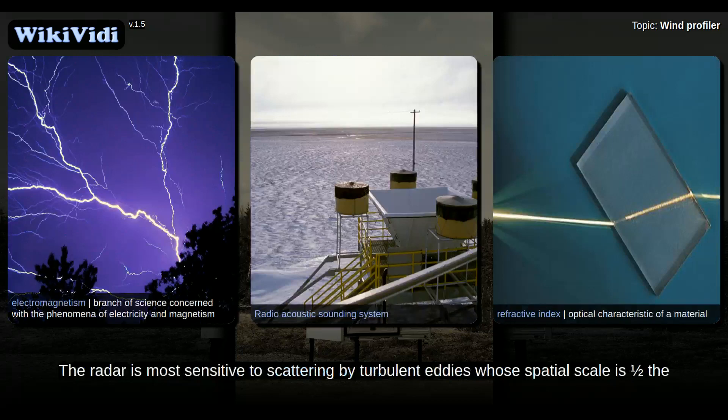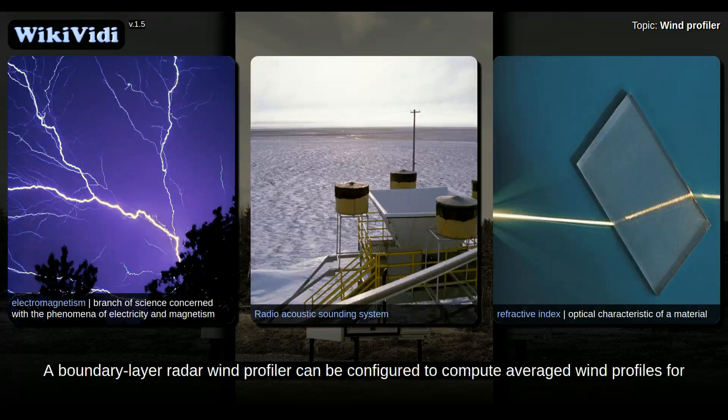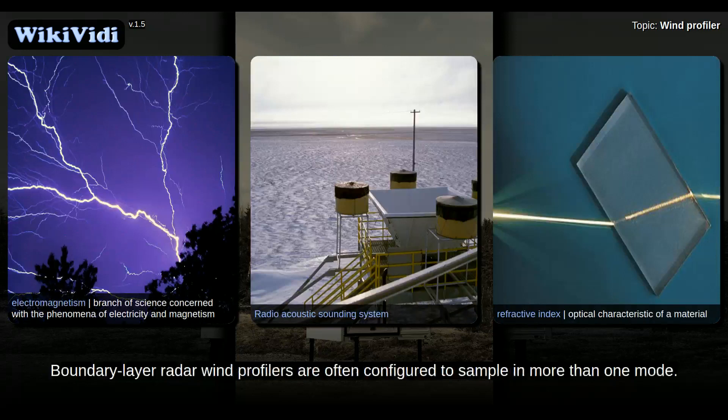The source of the backscattered energy is small-scale turbulent fluctuations that induce irregularities in the radio-refractive index of the atmosphere. The radar is most sensitive to scattering by turbulent eddies whose spatial scale is one-half the wavelength of the radar, or approximately 16 cm for a UHF profiler. A boundary layer radar wind profiler can be configured to compute average wind profiles for periods ranging from a few minutes to an hour. Boundary layer radar wind profilers are often configured to sample in more than one mode.